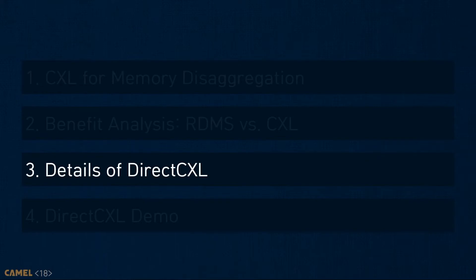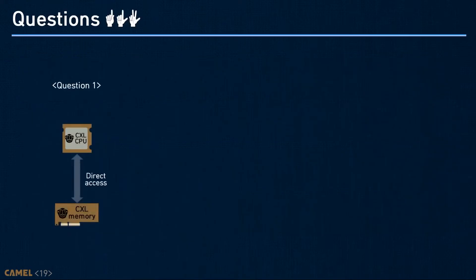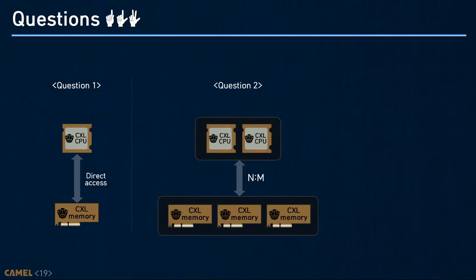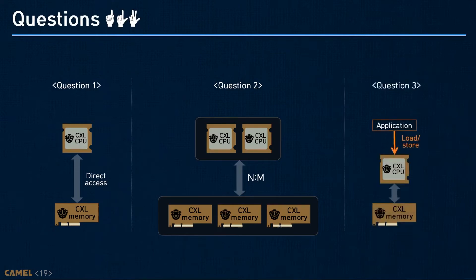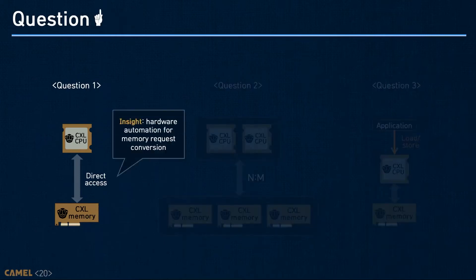In this section, I will explain how we designed DirectCXL by answering design questions. The first design question is how a CPU can directly access remote memory. The second design question is how to realize memory disaggregation using CXL. The last design question is how an application can use CXL-attached remote memory. To enable a CPU to access remote memory, the load-store instruction issued by the CPU is directly converted to a CXL packet.